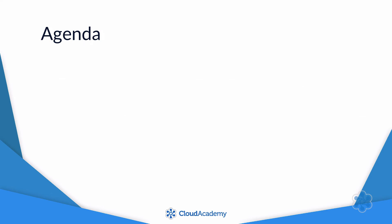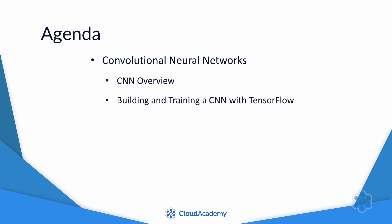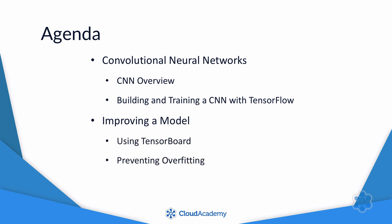In this course, we're going to work with convolutional neural networks, which have proven to be very useful models for some important machine learning applications. We'll start with an overview of convolutional neural networks, then I'll show you how to build one using TensorFlow. Next, we'll look at how to improve a machine learning model — first using TensorBoard to visualize how a model is performing, then I'll explain the problem of overfitting and different techniques to prevent it. Finally, I'll show you how to scale up your training jobs on ML Engine.